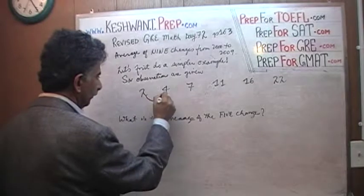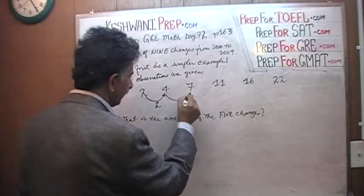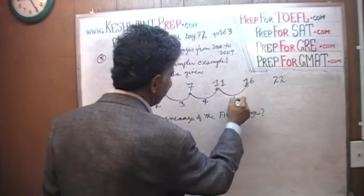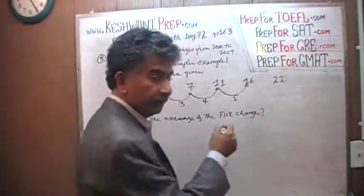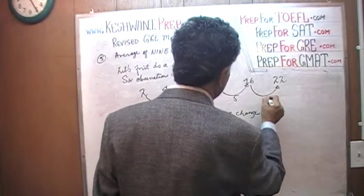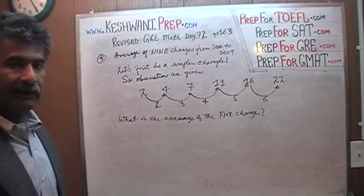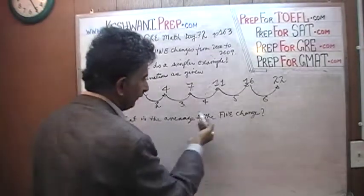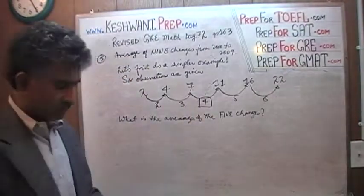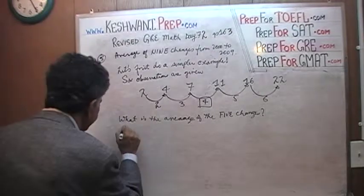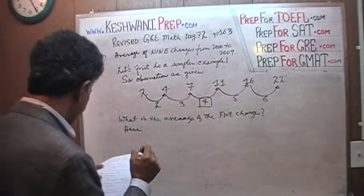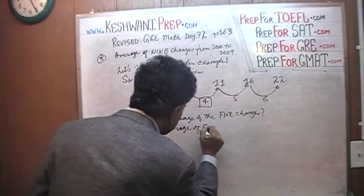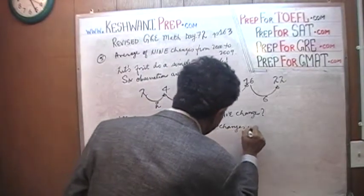The changes are as follows: from 2 to 4 is a change of 2; from 4 to 7 is a change of 3; from 7 to 11 is a change of 4; from 11 to 16 is a change of 5. And from 16 to 22 is going to be 6. Now we have to find the average of these five numbers. Since the numbers are consecutive, the average is simply the middle number — the average of the five changes is 4.